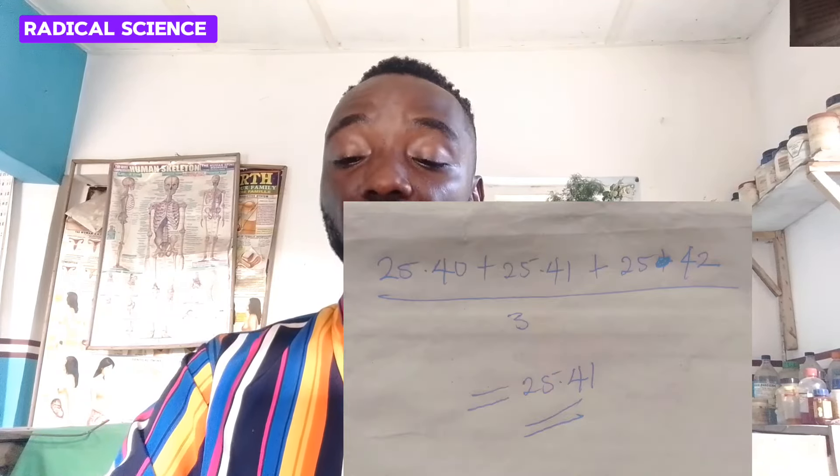The second question asks you to calculate the average titration volume. To do this, add up all the volumes of acid and divide by three. So: 25.40 plus 25.41 plus 25.42, divided by three, gives you 25.41 cm³. That becomes your average titration volume. You can see that it is very easy once you pay attention.